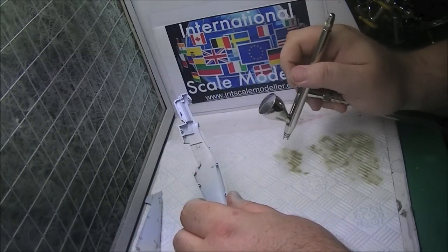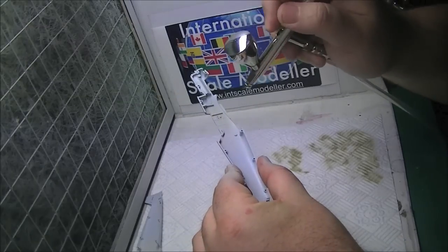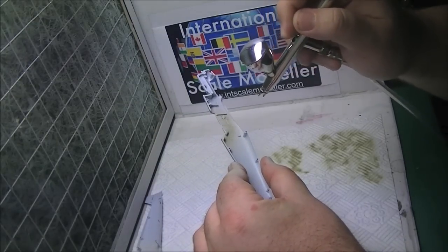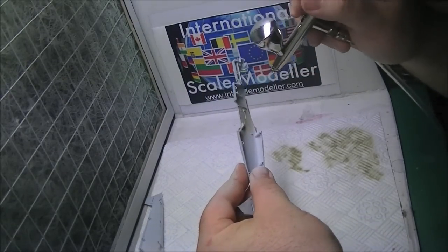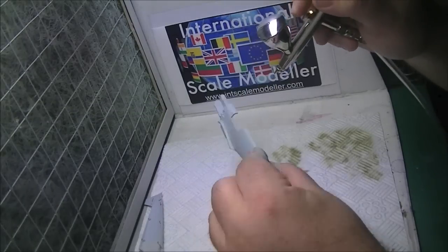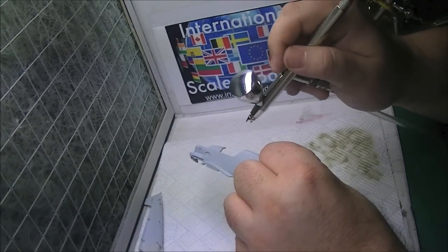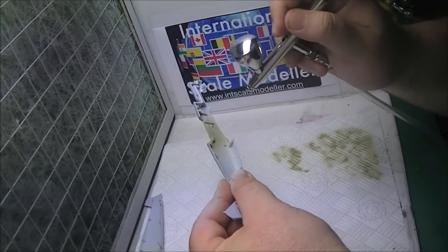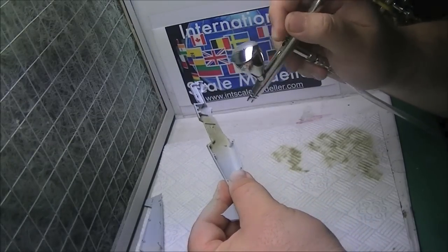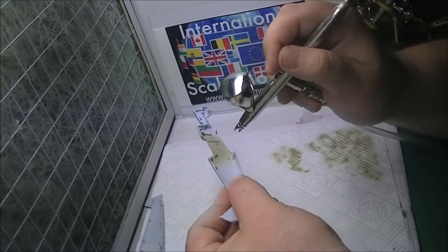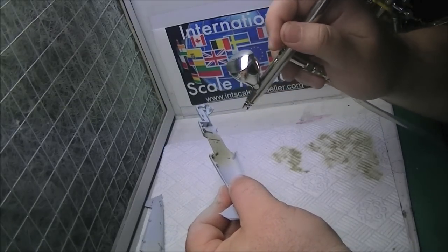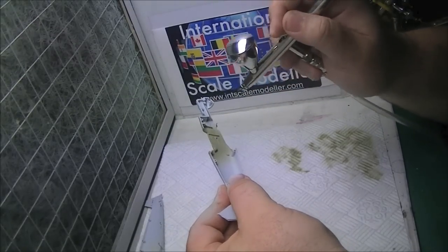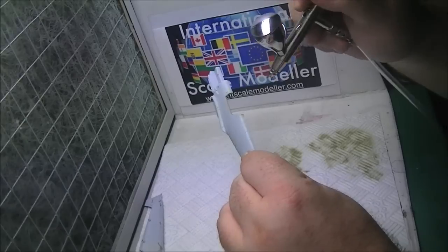So again, before you start spraying again, check your flow. I'll run to the side parts now. So again, just a light coat. We're not trying to cover it in one go. And don't forget the top parts where your canopy is going to be. Because they need to be the same colour as the inside.